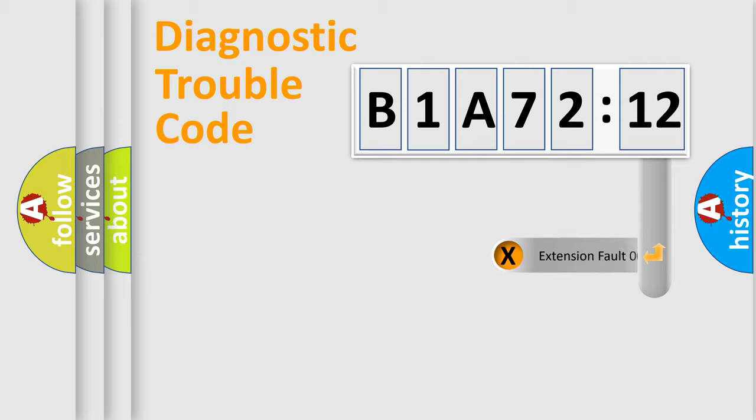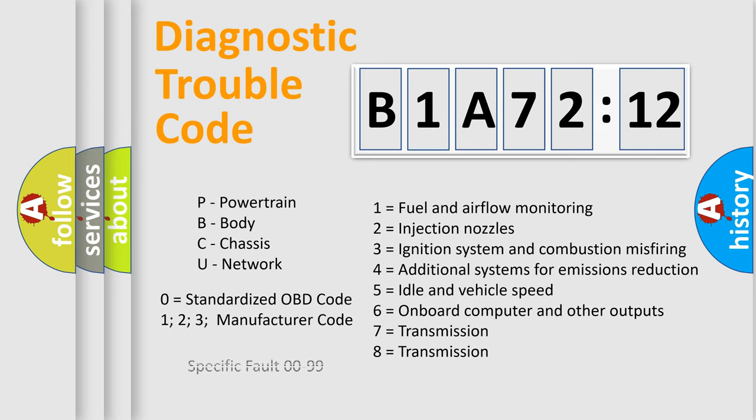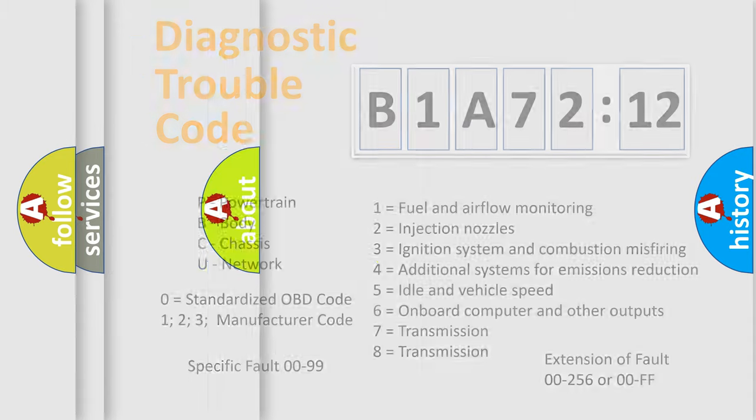Only the last two characters define the specific fault of the group. The add-on to the error code serves to specify the status in more detail, for example, a short to the ground. Let's not forget that such a division is valid only if the other character code is expressed by the number zero.